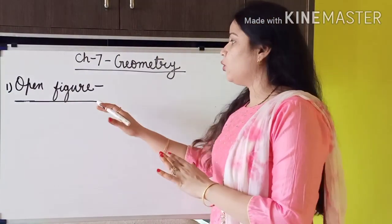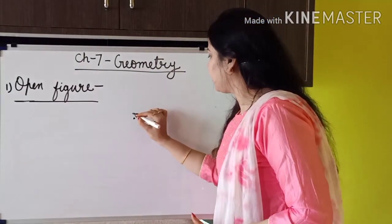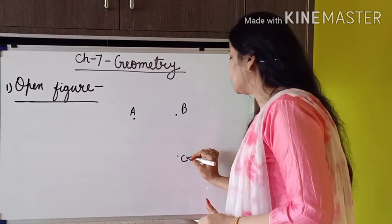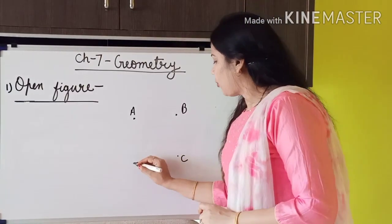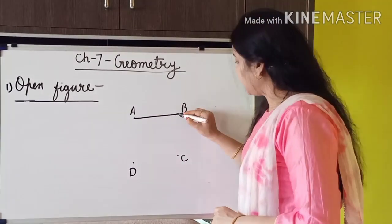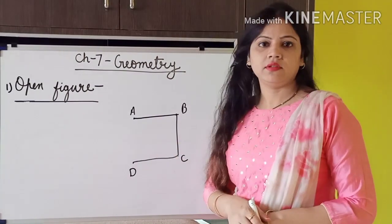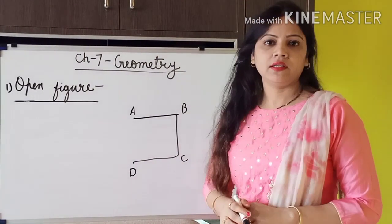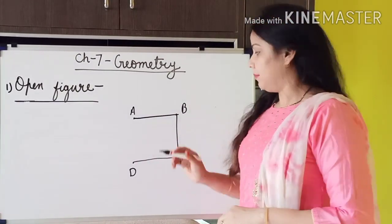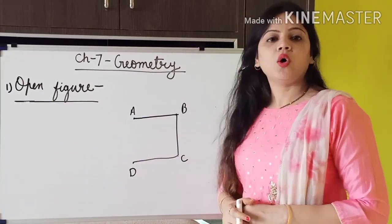Now, what is an open figure? In an open figure, the starting and end points are different. Suppose I have given points A, B, C, and D. I draw a line from A to B, then B to C, then C to D. But I have not drawn a line from D to A. So this is my figure — an open figure. The starting point is A but the end point is D, so this is the open figure.